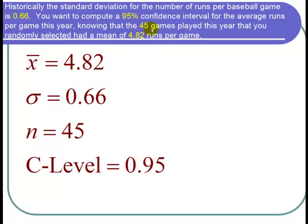Our sample was 45 games, so n = 45, and we want a 95% confidence interval. The calculator calls this the C-Level, which is 0.95.